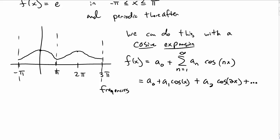So these represent certain discrete frequencies, namely ω equal to zero, ω equal to one, ω equal to two, and so on. We're choosing certain discrete frequencies in our Fourier expansion.